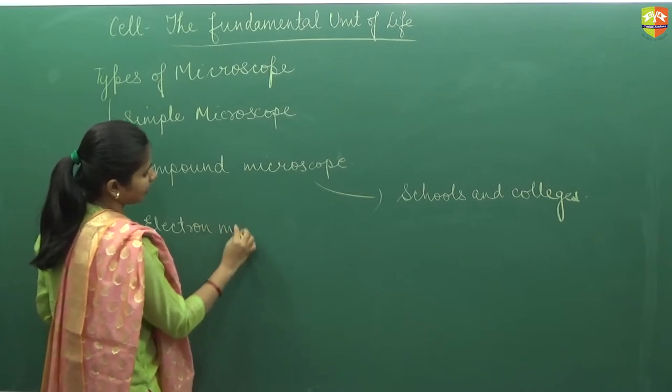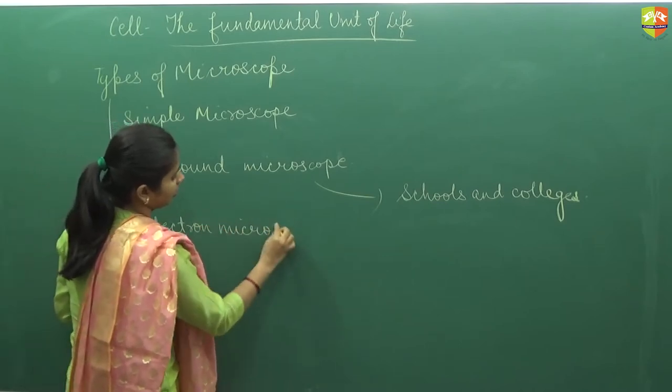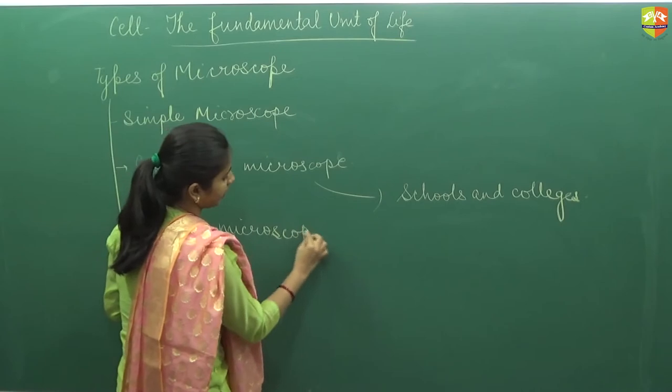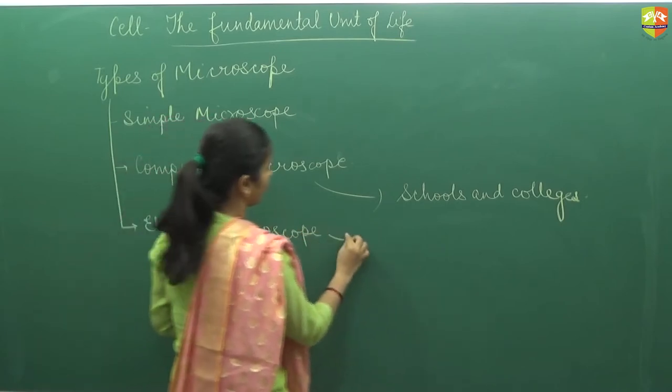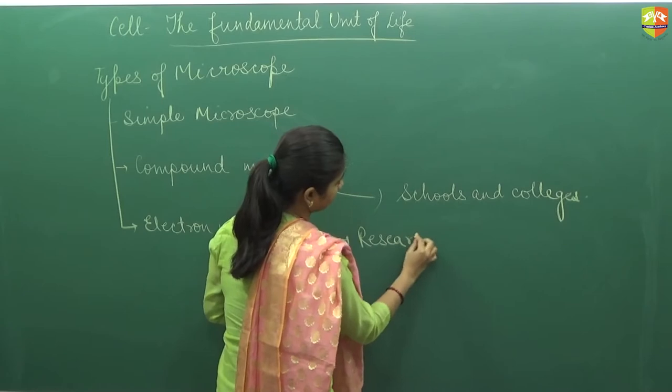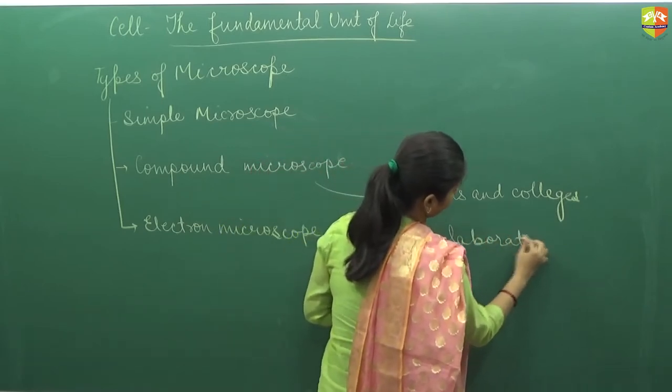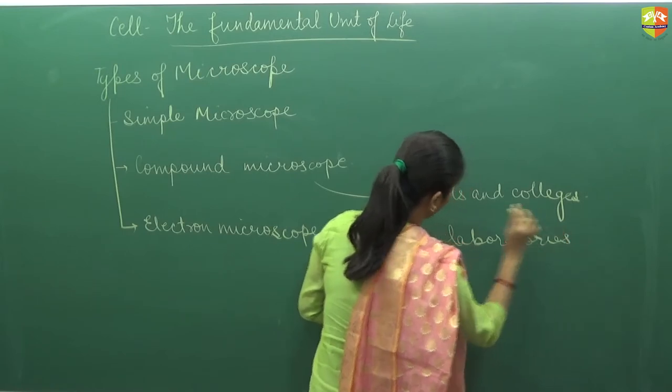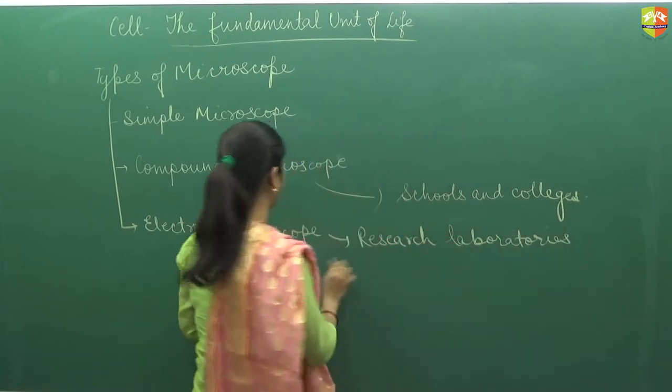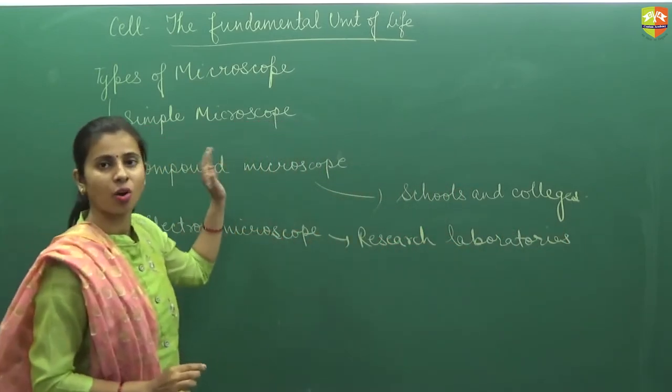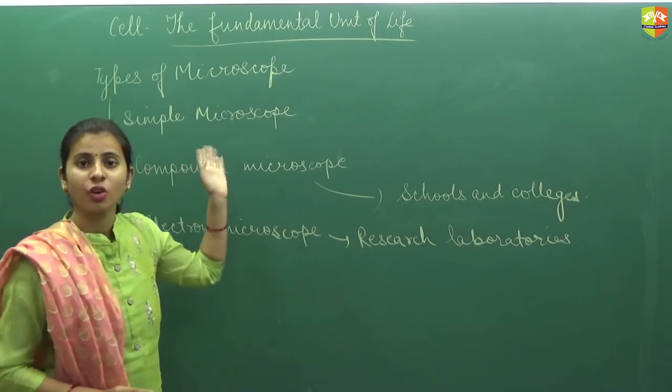Third is electron microscope, that is the latest microscope and that is only used in the laboratory where the researches are going on. So you can easily classify that research laboratories microscope is electron microscope.